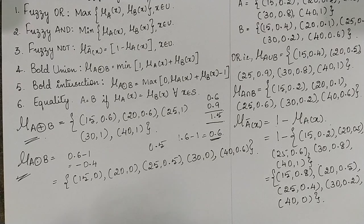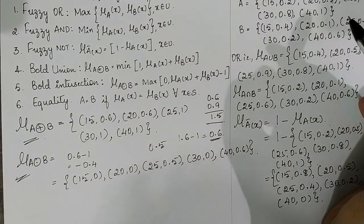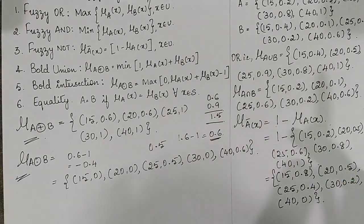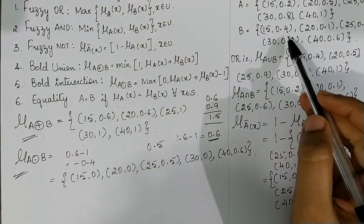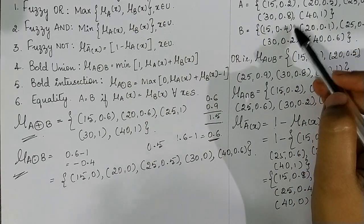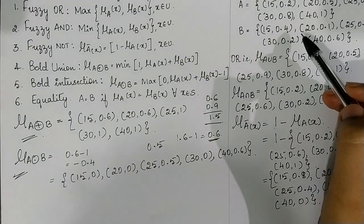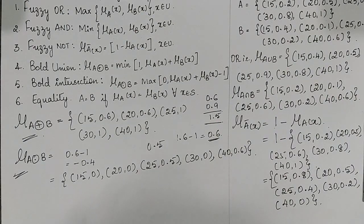The next is the equality operation. In equality, the values of the membership functions must be equal. For example, 15→0.2 in set A and 15→0.4 in set B — the values are not equal, hence we mention it as inequality. This is all about operations in fuzzy logic. Thank you.